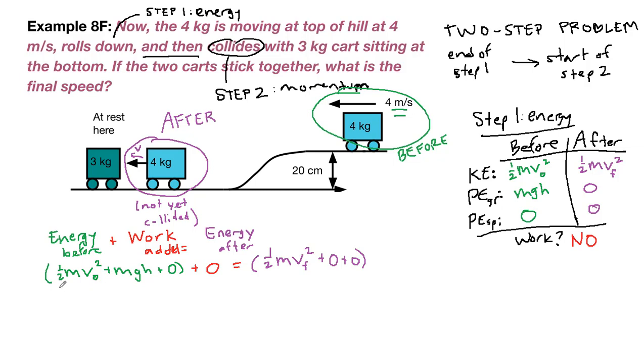So we have 1 half mv initial squared plus mgh plus 0 for the work term. And then for the energy after term, we have 1 half mv final squared plus 0 plus 0. We can plug in the numbers that we have. 1 half times just the 4 kilogram block. For mgh, we have 4 kilograms times 9.8 times 0.20 meters.